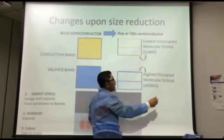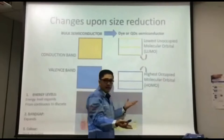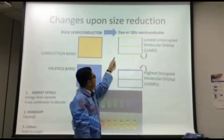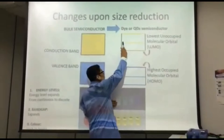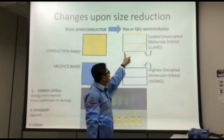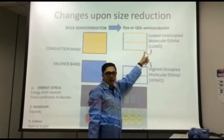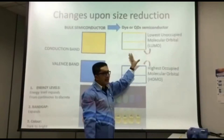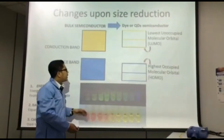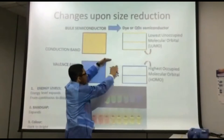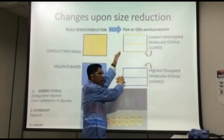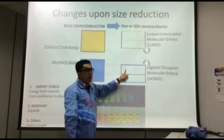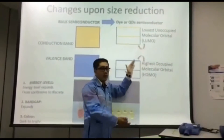The conduction band side we call Lowest Unoccupied Molecular Orbitals, or LUMO, because no electrons exist there — electrons occupy the lower energy levels. The highest of the occupied levels is the HOMO, and the lowest of the unoccupied is the LUMO. As you can see, the band gap expands when we reduce the size. This is quantum dot 1.